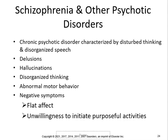Schizophrenia and other psychotic disorders: schizophrenia is a chronic psychotic disorder characterized by disturbed thinking and disorganized speech, delusions, hallucinations, disorganized thinking, abnormal motor behavior, negative symptoms, flat affect, and unwillingness to initiate purposeful activities. Flat affect is marked by a monotonous voice, immobile face, and no signs of expression. Types of schizophrenia include catatonic, disorganized, and paranoid. People who smoke marijuana can experience similar hallucinations and delusions.